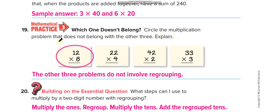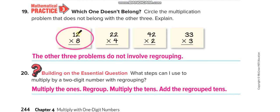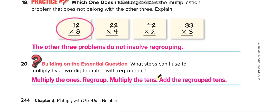Circle the multiplication problem that does not belong with the other three. So in these three we don't need regrouping, but in this one we need regrouping, like to take carry. 8 times 2 is 16, 6 here and 1 up. In this one we don't need to write any number up. What steps can I use to multiply by a two-digit number with regrouping? Multiply the ones, regroup, multiply the tens, add the regrouped tens. That's it.